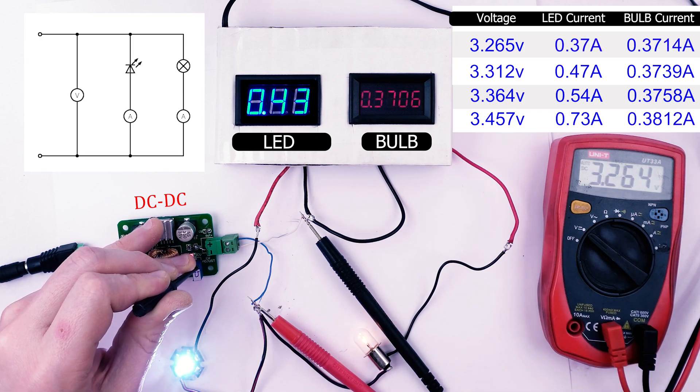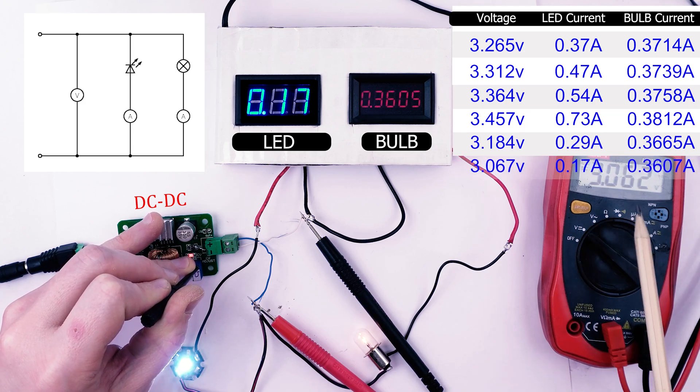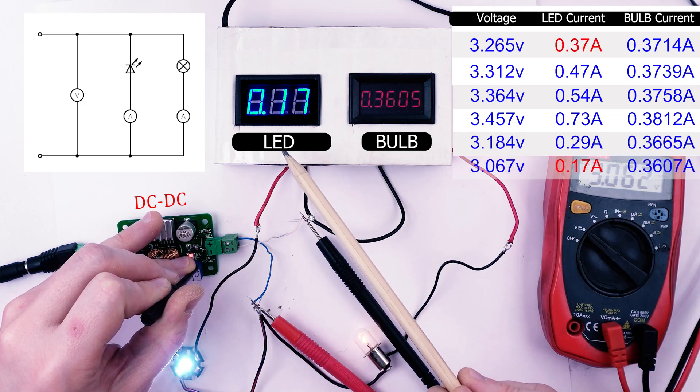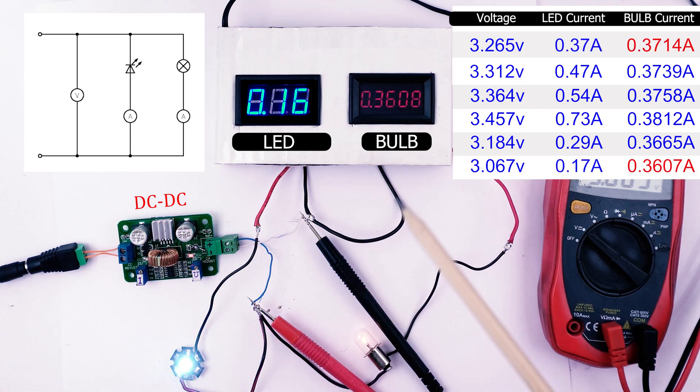Now I am decreasing the voltage. At 3V the LED current dropped almost by half. The lamp current, however, again changed insignificantly.